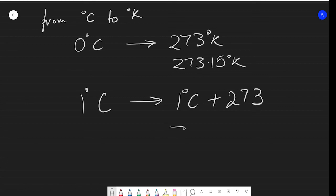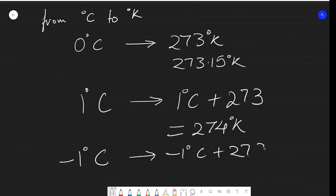For example, if it is minus 1 degree Celsius - since our thermometer can read from minus 10 to 100 degrees Celsius - then we calculate minus 1 degree Celsius plus 273. It's minus 1 plus 273, so we subtract 1 from this and get 272 degrees Kelvin.